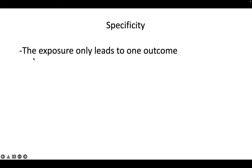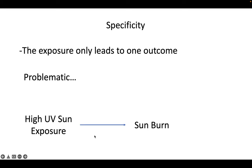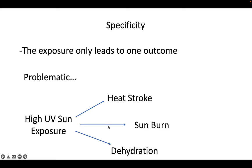Specificity is probably the worst one — the most controversial. It's that the exposure leads to one outcome, which is problematic. For example, smoking: it's pretty obvious that it's causing lung cancer, but if we use specificity as a causal criteria, we'd want to find that smoking only causes lung cancer and nothing else — but it causes all kinds of things. It's also problematic with our example because high UV sun exposure can lead to sunburn, but also to heat stroke and dehydration, which under this criterion would be evidence against UV exposure causing sunburn.